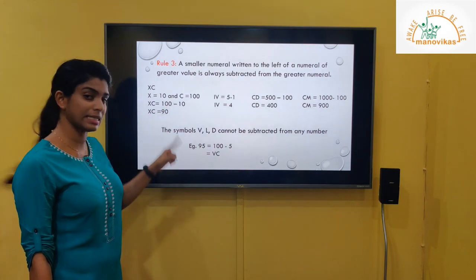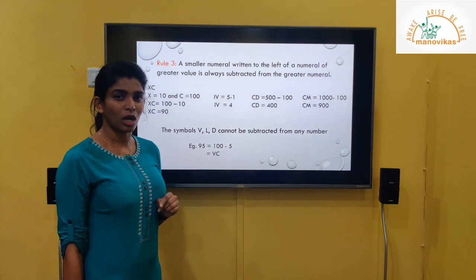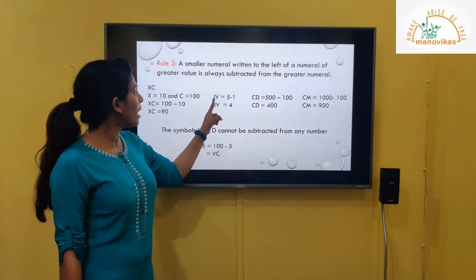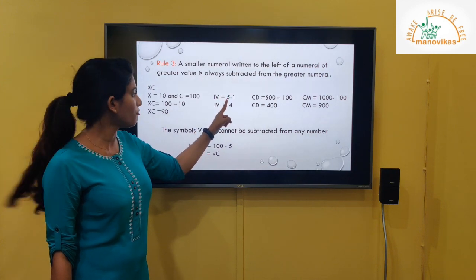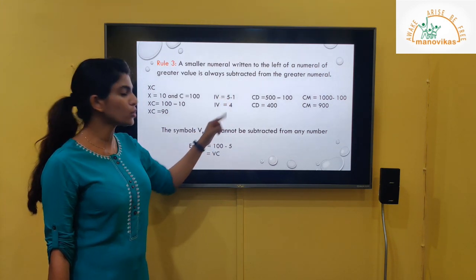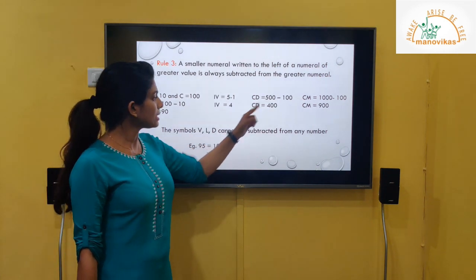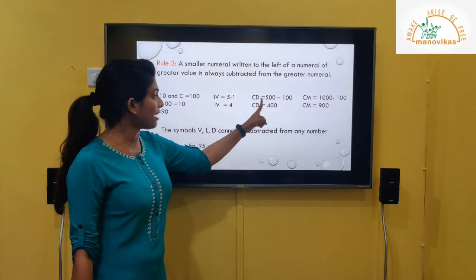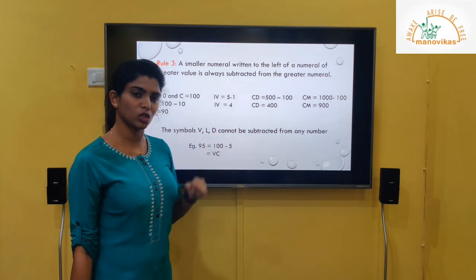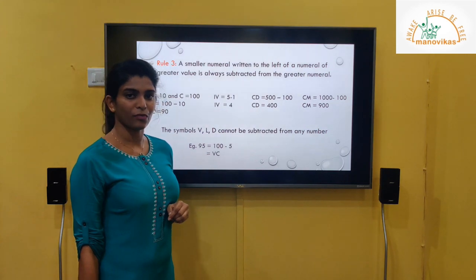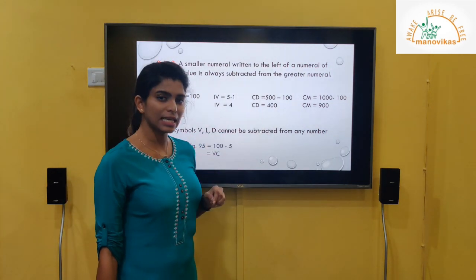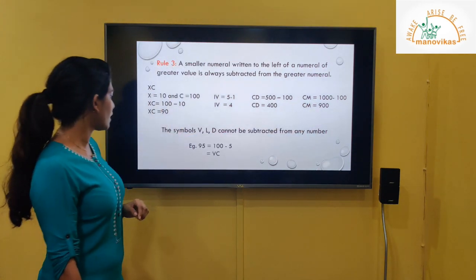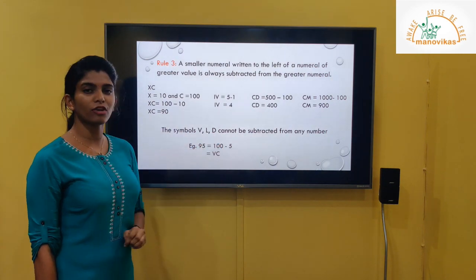So XC equals 90. Now, 4 is written as IV: IV equals 5 minus 1, so the value of IV is 4. CD: the value of D is 500 and C is 100, so 500 minus 100 gives us 400 — CD equals 400. CM: M is 1000 and C is 100, so after subtraction CM equals 900.